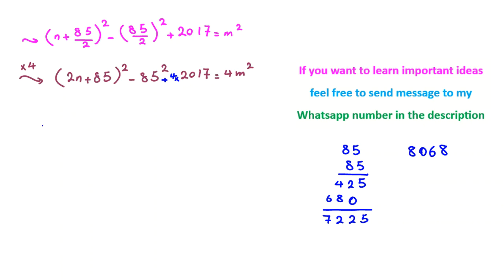4 times 2017 is 4 times 7 is 28, we have 2, 4 times 1 is 4 plus 2 is 6, 0, 8. So which one is greater? This one. So we can write the difference: 8 minus 5 is 3, 6 minus 2 is 4, 10 minus 2 is 8, 7 minus 7 is 0. So 843 equals 4m squared minus 2n plus 85 squared.